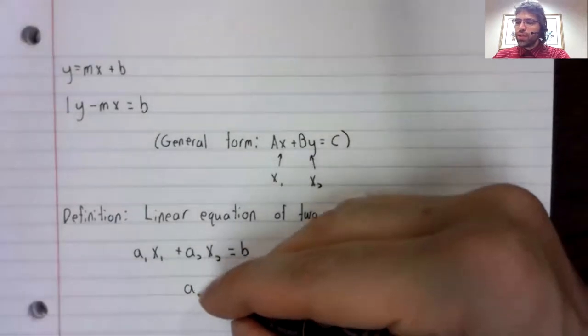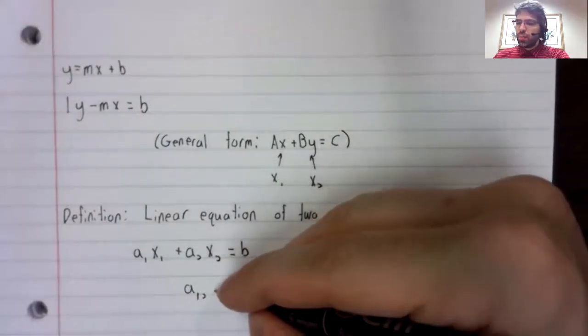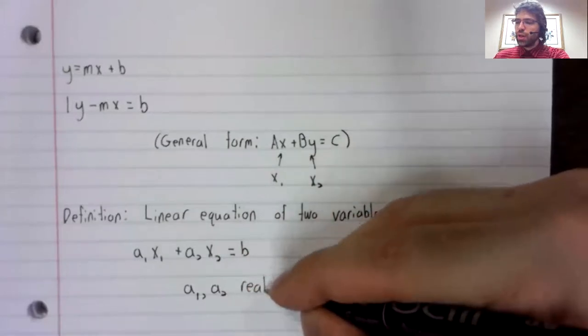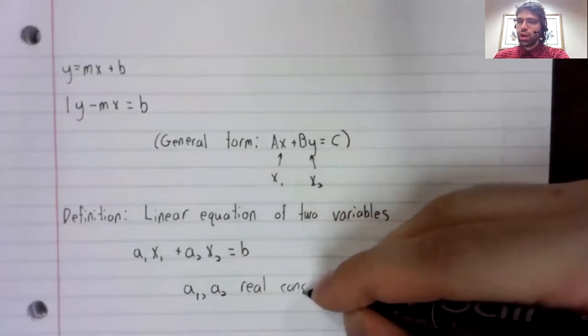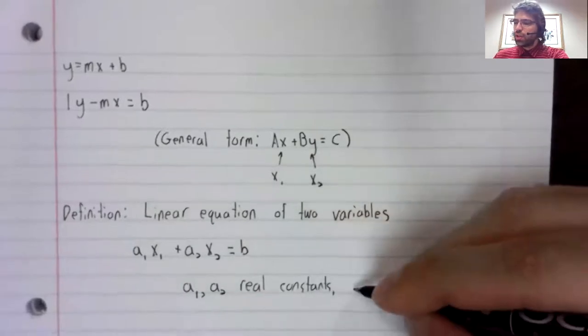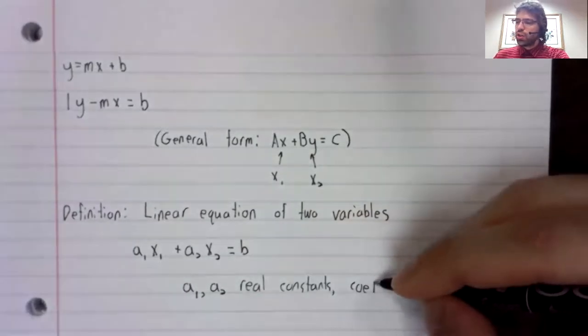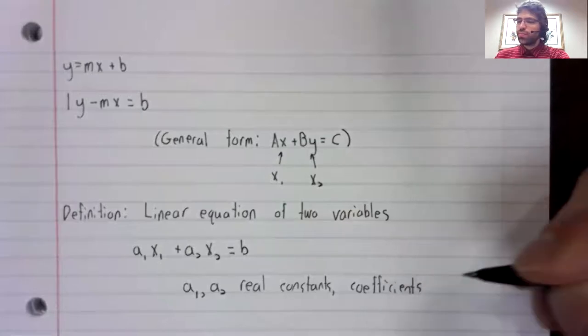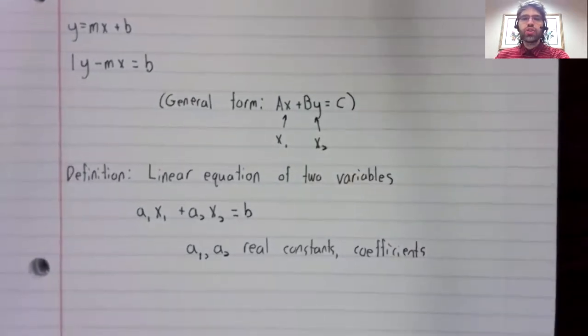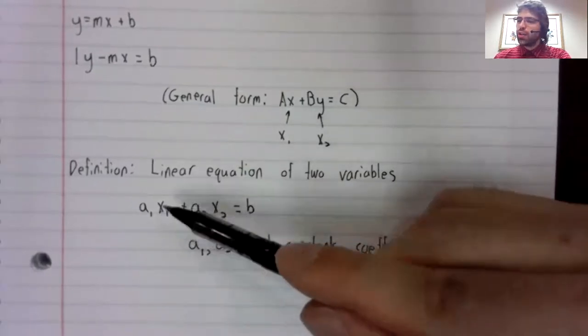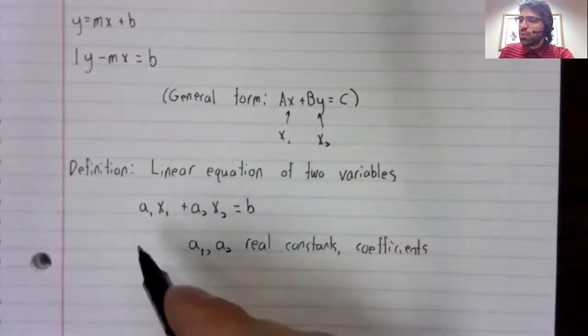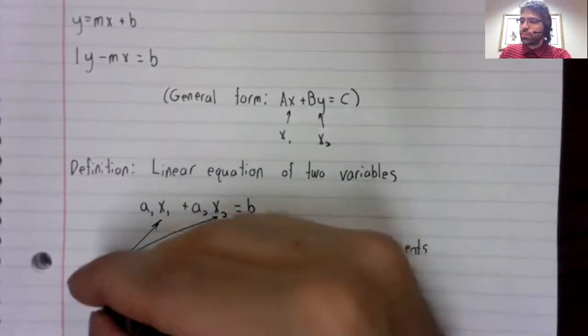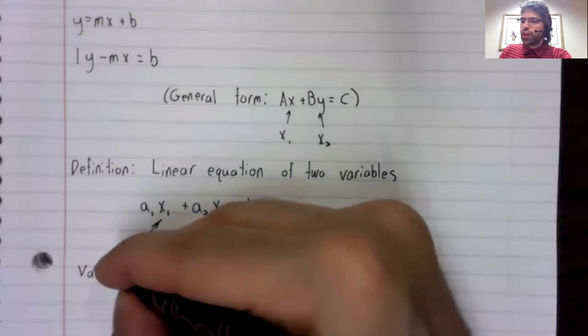In this equation, a sub one and a sub two are real constants called the coefficients of the equation, while x sub one and x sub two are variables.